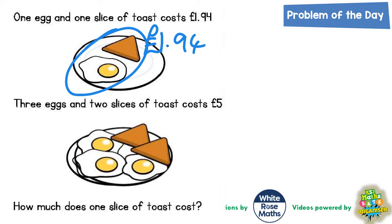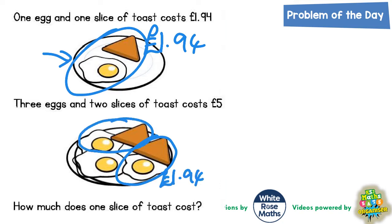The obvious thing to do here is use how I've grouped this egg and toast together to make £1.94 and do the same on the second diagram. So if one egg and one toast is £1.94, then this egg and toast is £1.94, and this egg and toast is also £1.94.